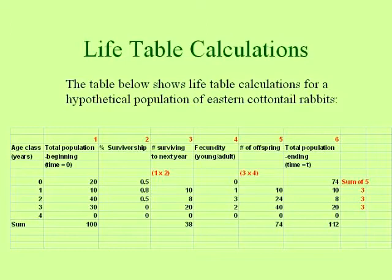Fifty percent of twenty is ten. Notice that ten is dropped a row, because the young of the year, by the next year, are one-year-olds. Then eighty percent of ten is eight when they become two-year-olds, and so on, which means that the number surviving out of that hundred the next year is a total of thirty-eight.